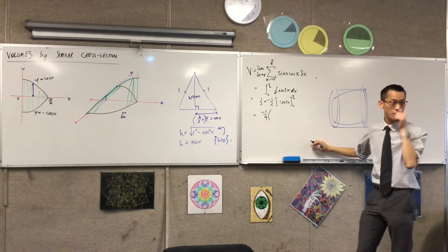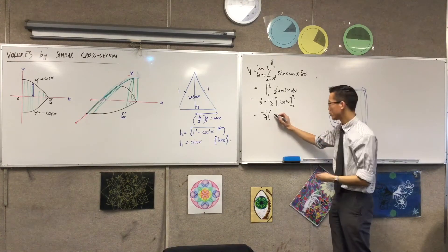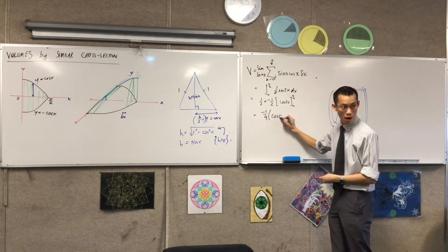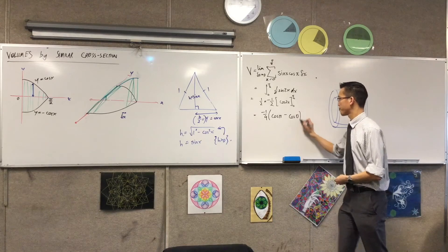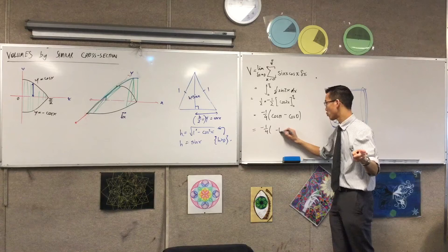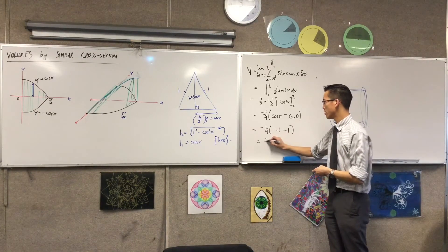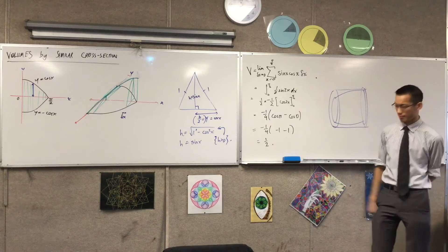That leaves you with a negative 1 over 4 out the front. What's going to be inside here? Okay, I'm actually going to write the values first. So cos of pi minus cos of 0 minus a quarter. Cos of pi, of course, is negative 1 minus 1. So that's negative 2. It's volume.